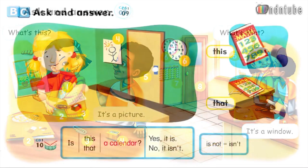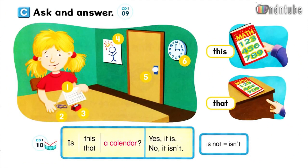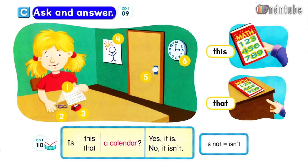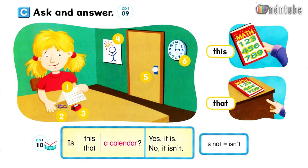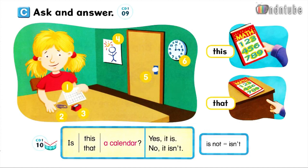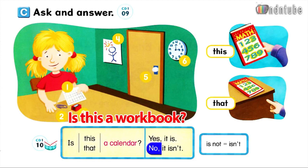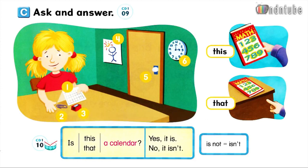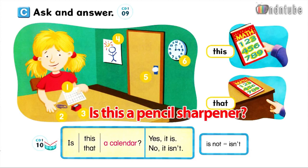Page 7. C. Ask and answer. Number 1. Is this a calendar? Yes, it is. Number 2. Is this a workbook? No, it isn't. Number 3. Is this a pencil sharpener? Yes, it is.